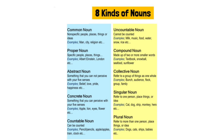Now we have collective noun. Collective nouns refer to a group of things as a whole. From the name you can understand that it refers to things which are in a group. For example: bunch, audience, flock, group.